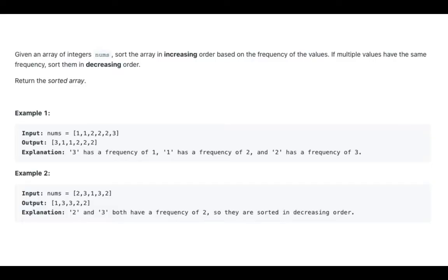Example 1: nums is [1, 1, 2, 2, 2, 3]. The output is [3, 1, 1, 2, 2, 2]. Explanation: 3 has a frequency of 1, 1 has a frequency of 2, and 2 has a frequency of 3.